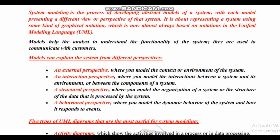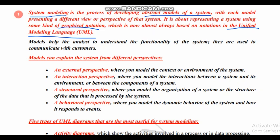Basically, system modeling is nothing but it is a process of designing different types of models. These different types of models will give you an abstract idea about your software. By using this model we will come to know what is exactly our system. There are different types of models which will have different types of views towards the software. In short, system modeling is the process of developing abstract models of a system with different views. It is about representing a system using graphical notations, most of which are called UML, that is Unified Modeling Language.